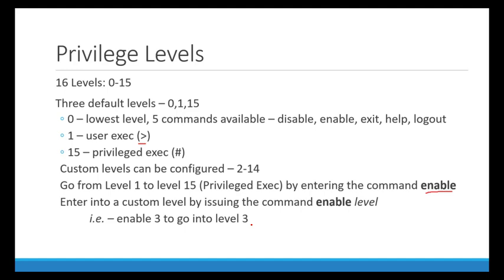One of the important things to understand about privilege levels is that a higher number has greater privilege, and those higher levels inherit all the commands of a lower level. By default, level 1 has all the commands already configured in level 0. Level 15 has all the commands, including everything in levels 1 and 0, plus additional commands.